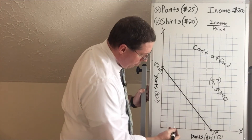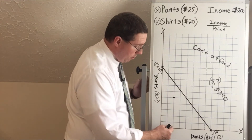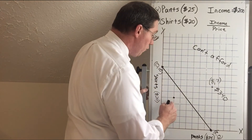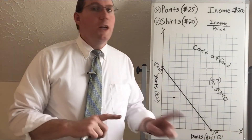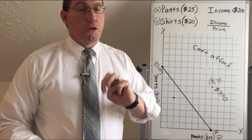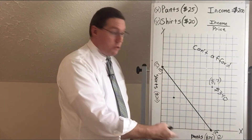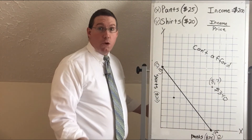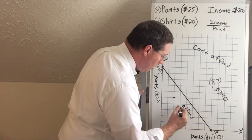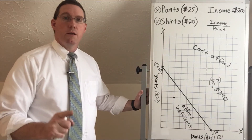Anything under the line — for example, two pairs of pants and five shirts — is something this family can afford. That costs $50 for the pants plus $100 for the shirts, which is $150, leaving $50 left over. But in microeconomics, we don't want money left over — if we're saving money, that's a third product and needs its own axis. Anything inside the region is affordable but inefficient, and we don't want to be inefficient.